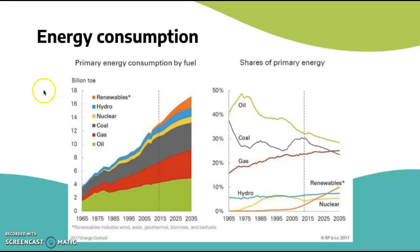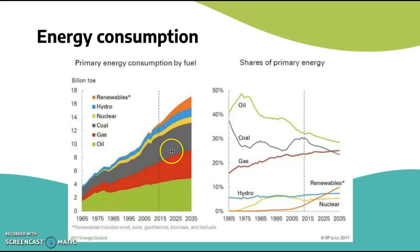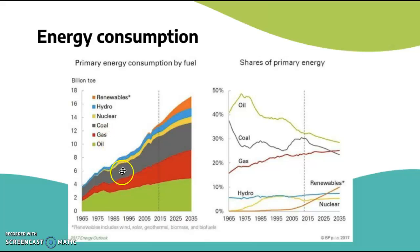Now we're going to look at energy consumption. Looking at primary energy consumption by fuel from 1965 to 2035 — this includes a projection. Oil is taking up the most, gas is also very significant, and coal is also taking up a large proportion of all consumption. Coal, oil, and gas are all fossil fuels, bad for the environment, and they are all increasing.